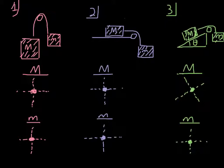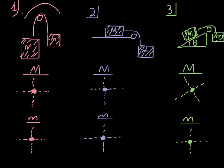Scenario one: I have two masses connected by a string — big mass M and little mass m — connected by a string or rope over a pulley. I'm expecting big mass M to win, so I'm expecting big mass to go down and little mass to go up. The entire system is rotating this way.